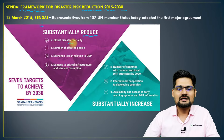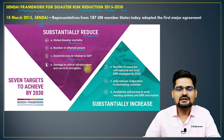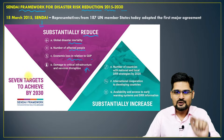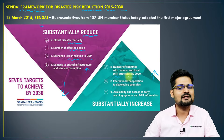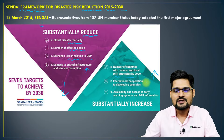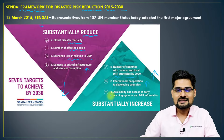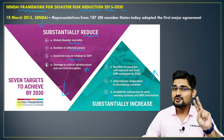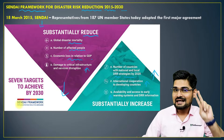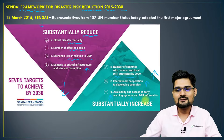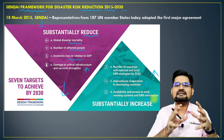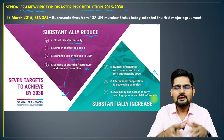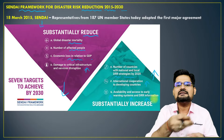What we need to reduce is global disaster mortality, number of affected people, economic losses in terms of GDP, and damage to critical infrastructure and service disruption. What we need to increase includes the number of countries with national and local disaster risk reduction strategies by 2020, international cooperation to developing and third world countries, and availability and accessibility to early warning systems and disaster risk reduction information systems. These things are part of integrated systems that work together.